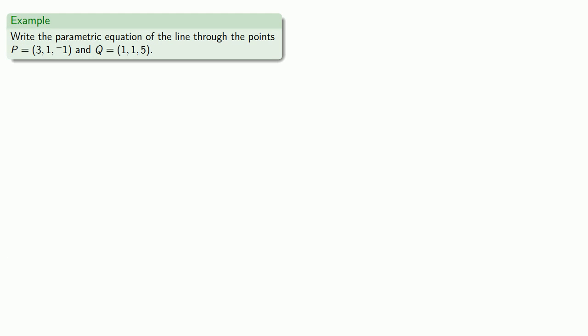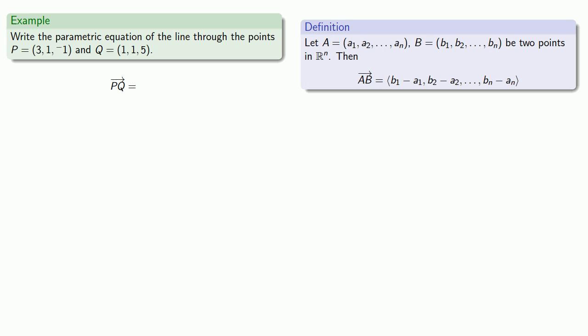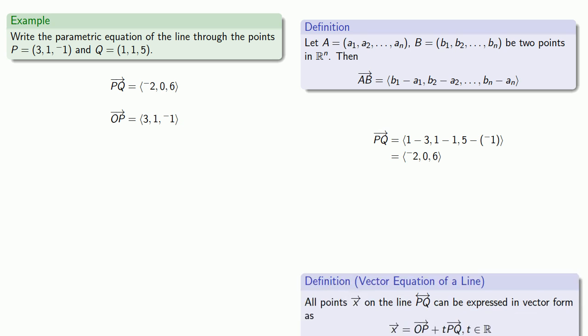So if I want to write the parametric equation of the line through the points P and Q, the first thing I want to do is find the vector that points in the same direction as the line. I want to find the vector PQ. So we can find that by subtracting the coordinates of the beginning and ending points. And we get our vector PQ. The vector OP is going to have the same components as the coordinates of P. And now I have the vector that will take me to a point on the line, and the vector that will take me along the line, so I can substitute those into our equation.